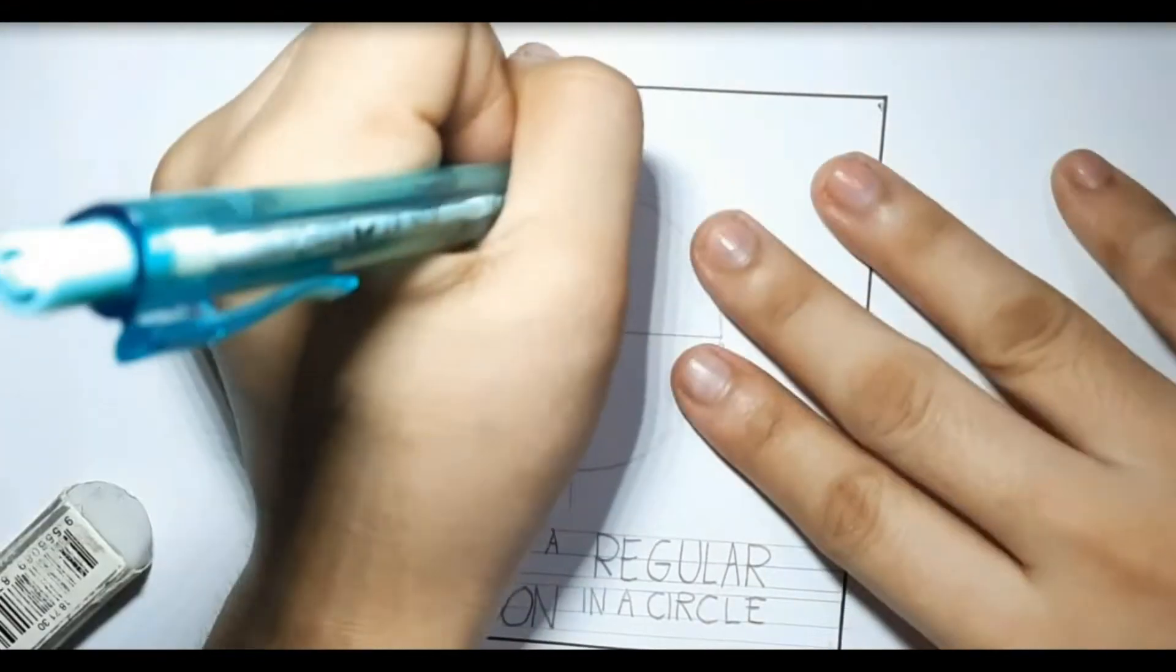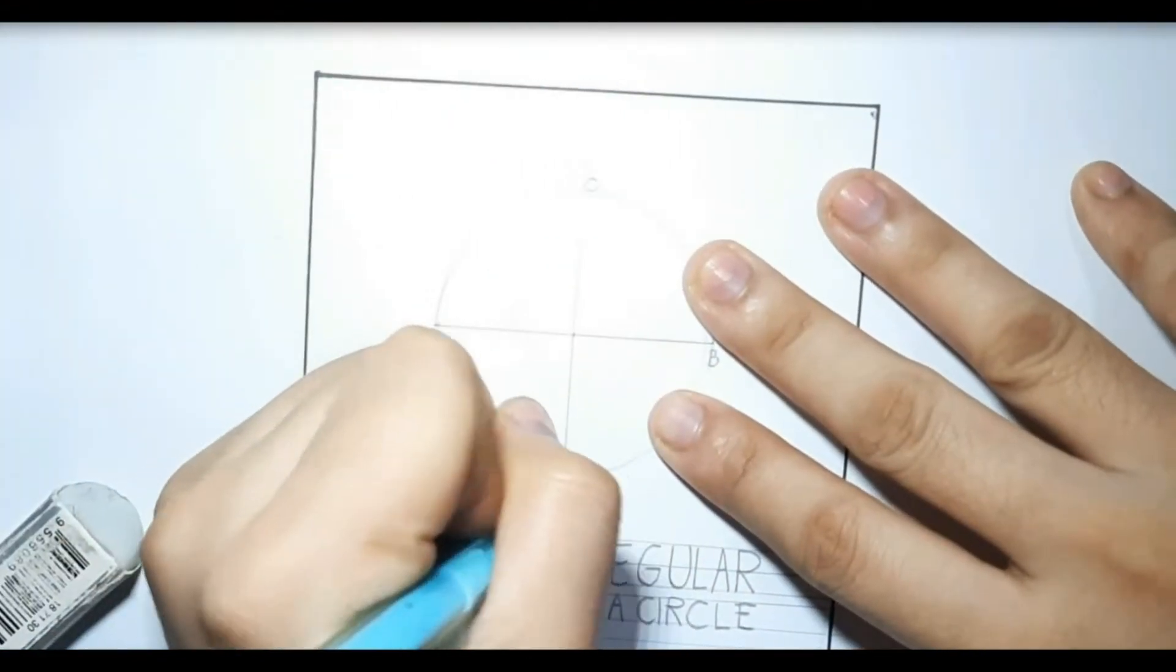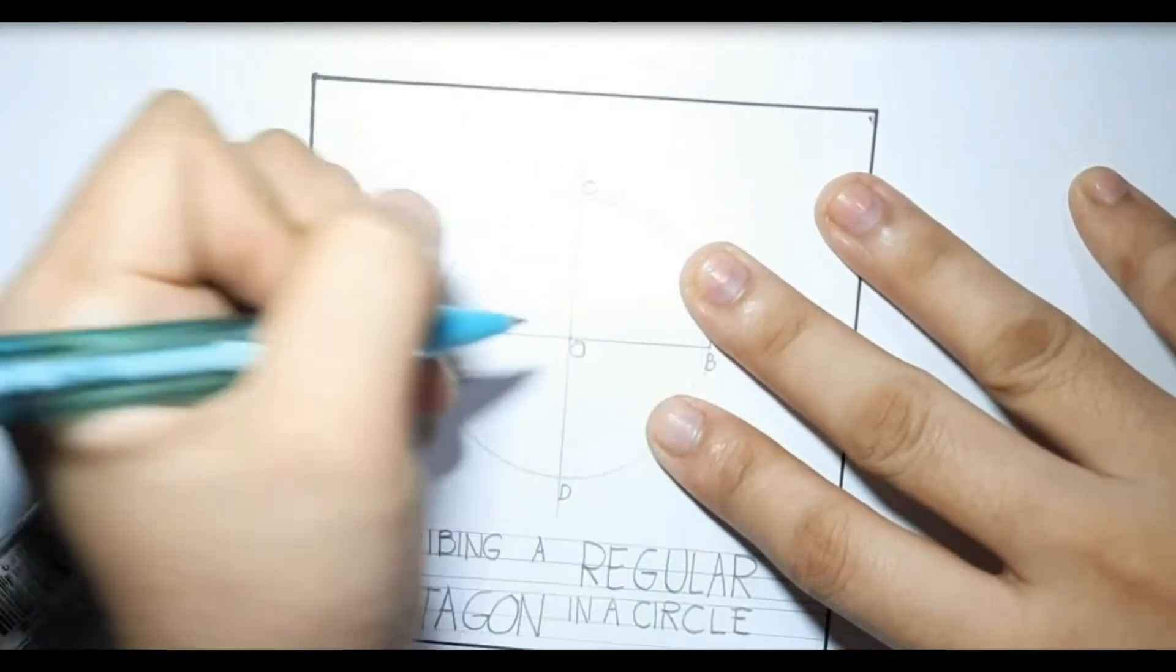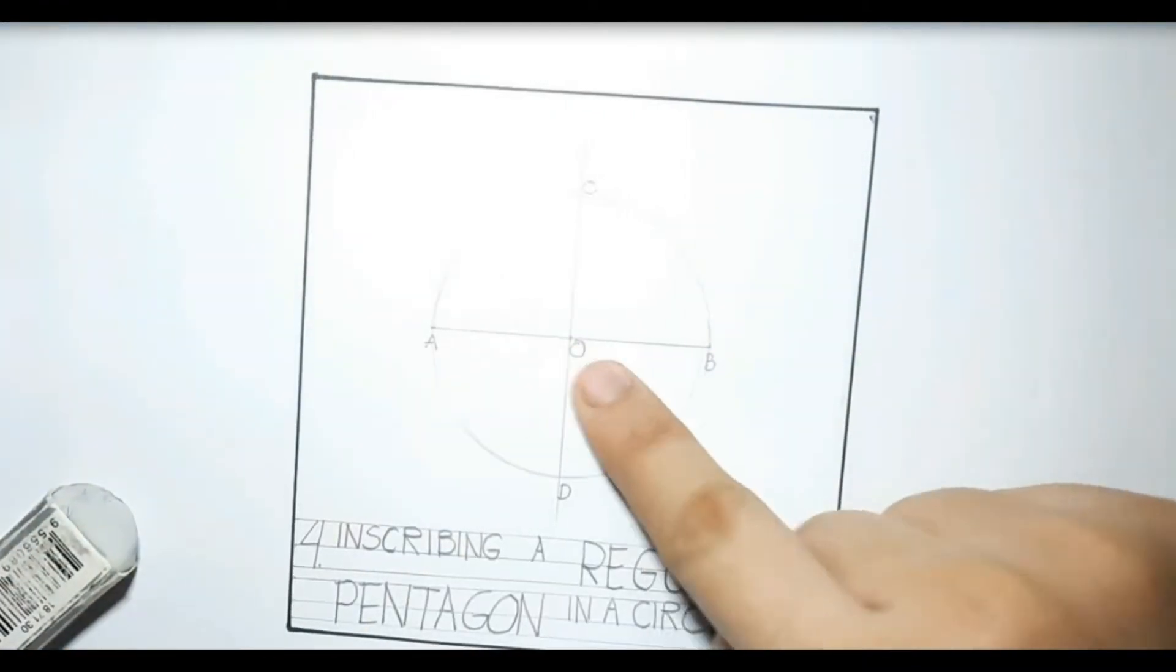The vertical line passes through the circle. We're gonna name point C and point D.